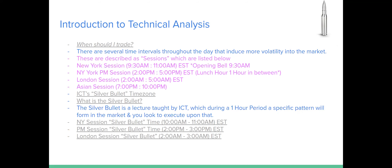When should I trade? There are several time intervals throughout the day that induce more volatility into the market. Specifically with futures, you want to key in on what we call the New York session. For those residing in the U.S., it's in the morning — from 9:30 a.m. to 11:00 a.m. Eastern Time. There's a term called the opening bell, which is at 9:30 a.m. Eastern Standard Time. My advice is to look at that main New York session in the morning, as that is typically the most volatile time to be trading.